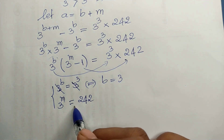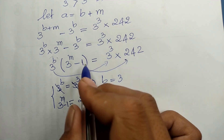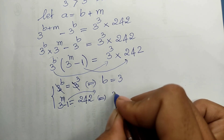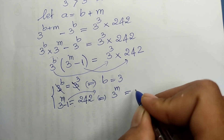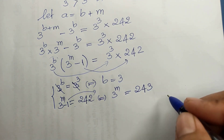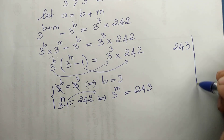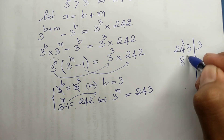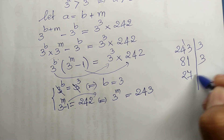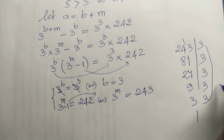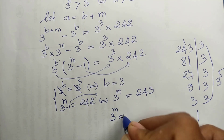From 3^b = 3^3 we get b equals 3. And 3^m minus 1 equals 242, so 3^m equals 243. Dividing 243 by 3 repeatedly: 243 ÷ 3 = 81, ÷ 3 = 27, ÷ 3 = 9, ÷ 3 = 3, ÷ 3 = 1, giving us 3^5. So 3^m equals 3^5, and therefore m equals 5.